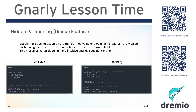Another example would be, imagine a political party. They have candidates in different states, so they might want to partition their voter data by state. In that case, if I only want to look up voters in Wisconsin, that data is physically segregated, so it'll quickly just scan the Wisconsin data separate from the Florida data, the Ohio data, etc.